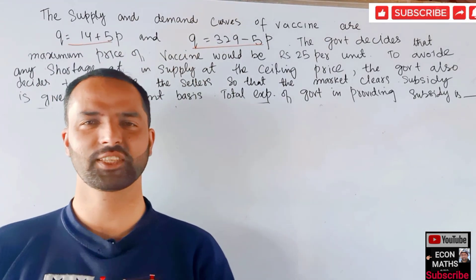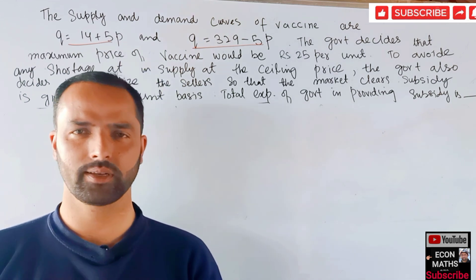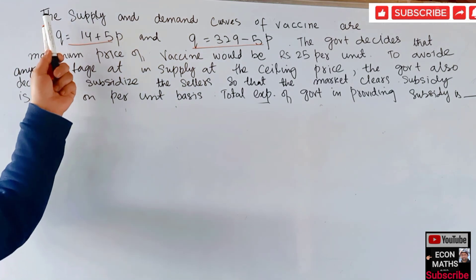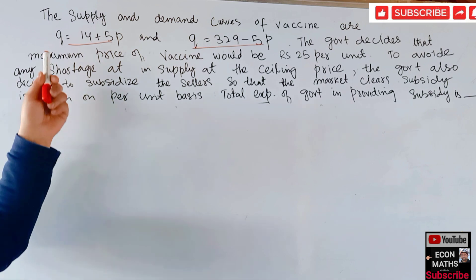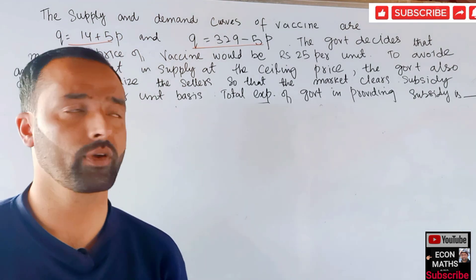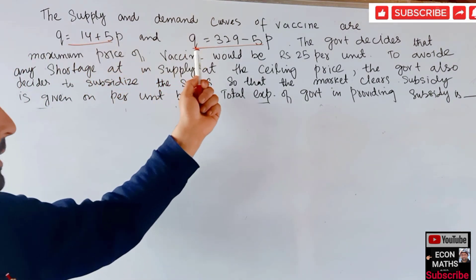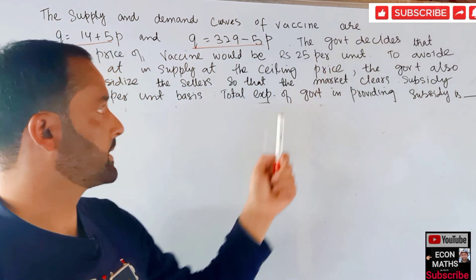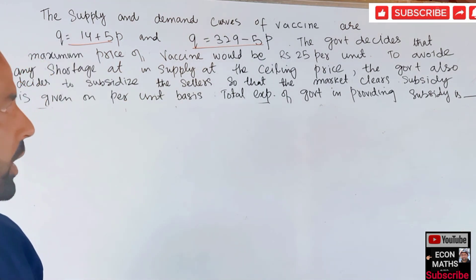Hey, this is Halal. In this video on the mathematical economics series, we will solve a numerical from the IIT JAM Economics paper of 2021. The question gives us supply and demand functions for a vaccine: the supply function is Q = 14 + 5P, where Q is units of vaccine and P is price. The demand function is Q = 329 - 5P. The government decides the maximum price of the vaccine would be ₹25 per unit.